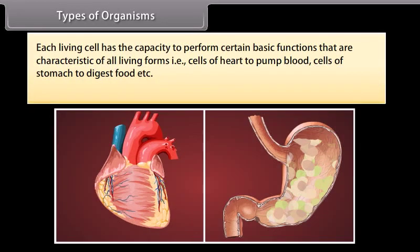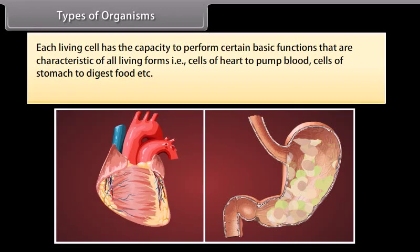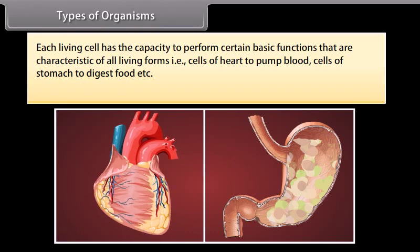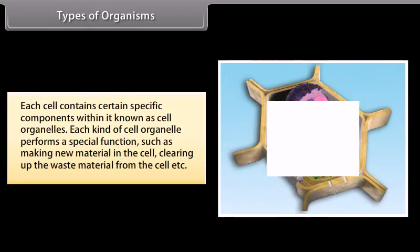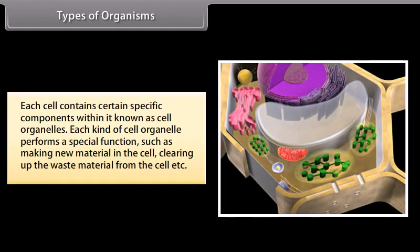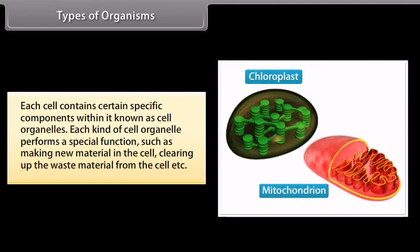Each living cell has the capacity to perform certain basic functions that are characteristic of all living forms — for example, cells of the heart pump blood and cells of the stomach digest food. Each cell contains certain specific components within it known as cell organelles. Each kind of cell organelle performs a special function, such as making new material in the cell or clearing up waste material from the cell.